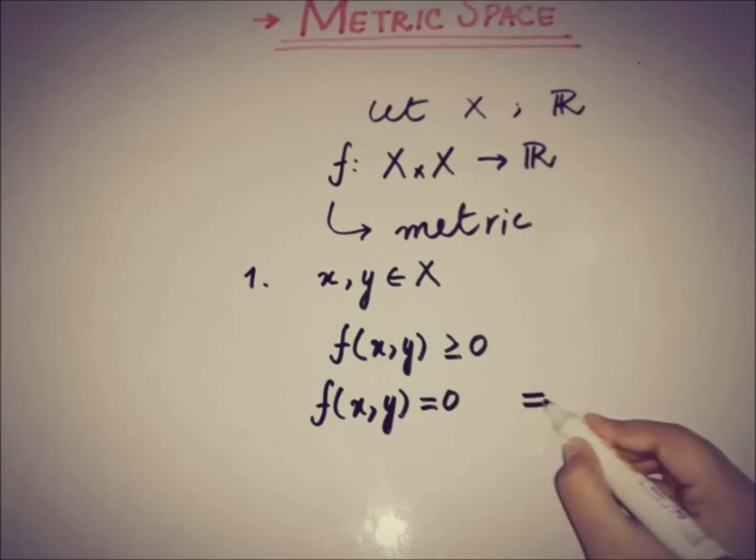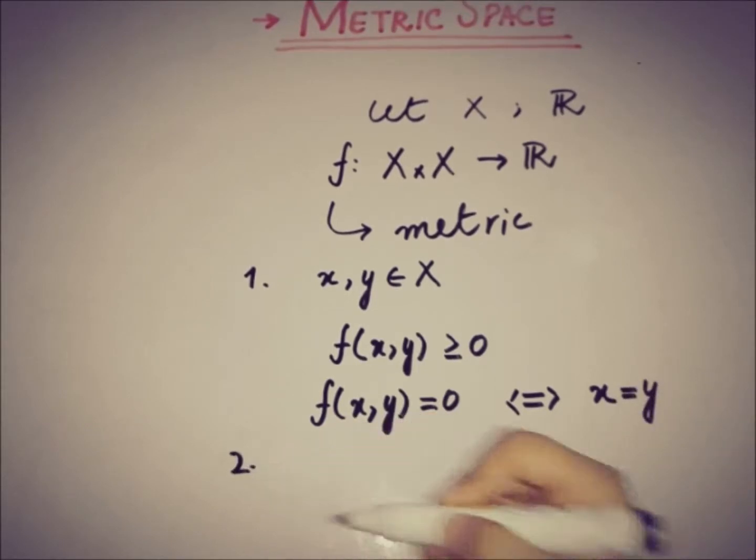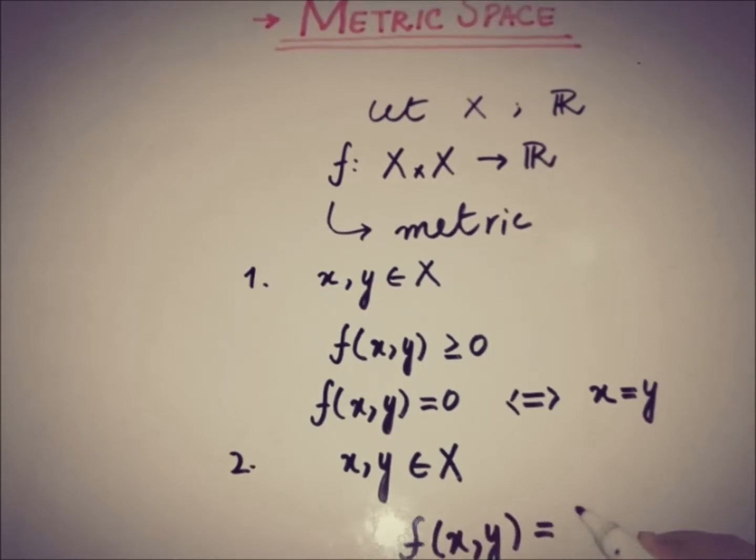The second property is for every pair x, y belongs to the set X, function f(x,y) has the same value as f(y,x). It has symmetry in it. So the second property is about symmetry of the function. The first property is about the positivity.